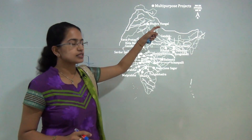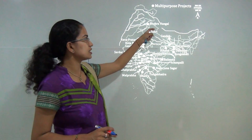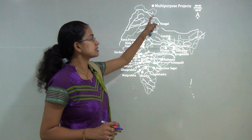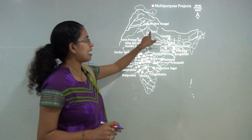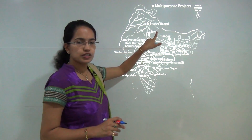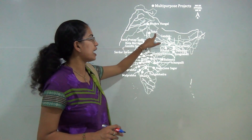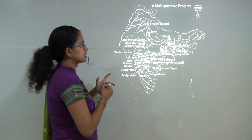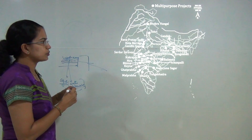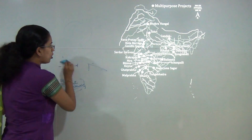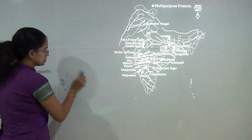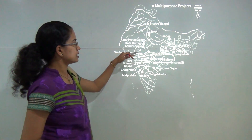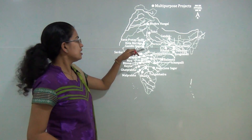One important dam is Bhakra Nagal — considered one of the gravity dams in India. It consists of two dams, Bhakra and Nagal, among the highest in the world. The recently built Tehri Dam is one of the highest dams in India and among the highest in the world. On the Chambal project, there are three major dams: Rana Pratap Sagar, Kota Barrage, and Gandhi Sagar. Their order from north to south is important. Sardar Sarovar Dam on the Narmada is also important.